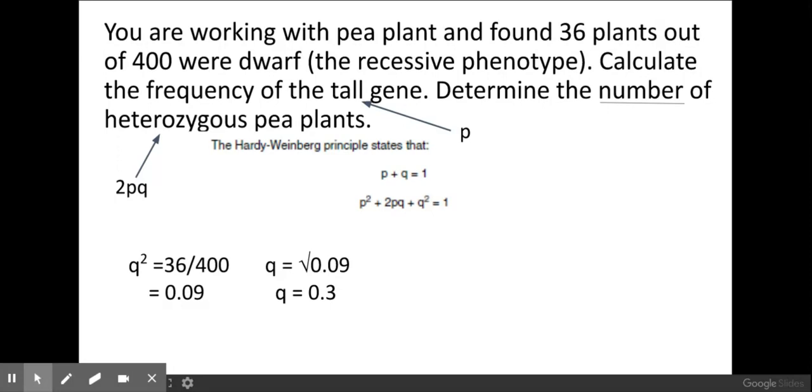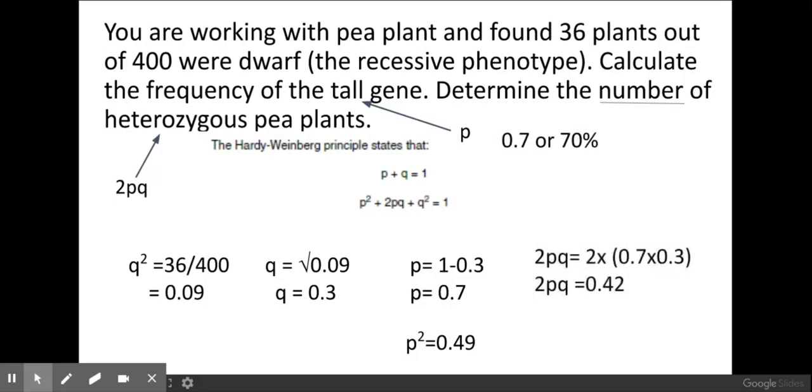I then square root 0.09 to give me q. If I know what q is, I can then find out what p is by using this top formula: 1 take away 0.3 which I know my value is for q, and that gives me p which is 0.7. Once I've got my value for p I can then square it. I could also find out my 2pq by doing 2 times what I know for p and what I know for q, and that gives me 0.42. Now 0.42 is the percentage of 42 percent. So in order to find out the number of individuals that are heterozygous, I need to times 0.42 times 400, which is the total number of individuals, to give me 168 individuals that are heterozygous.